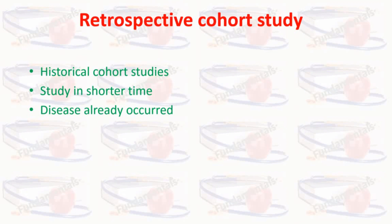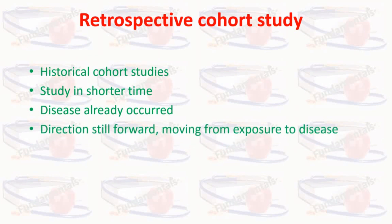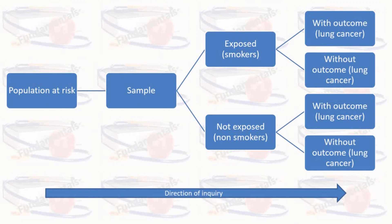In retrospective cohort study, the disease has already occurred. But the direction is still forward — moving from exposure to disease, from risk factor to disease. This is the design of the retrospective cohort study.